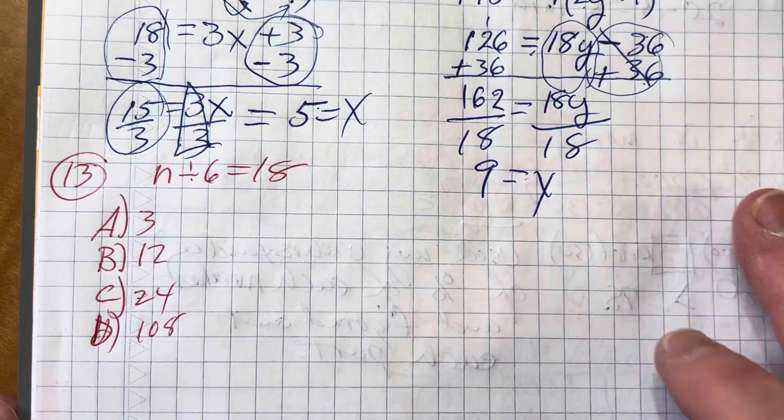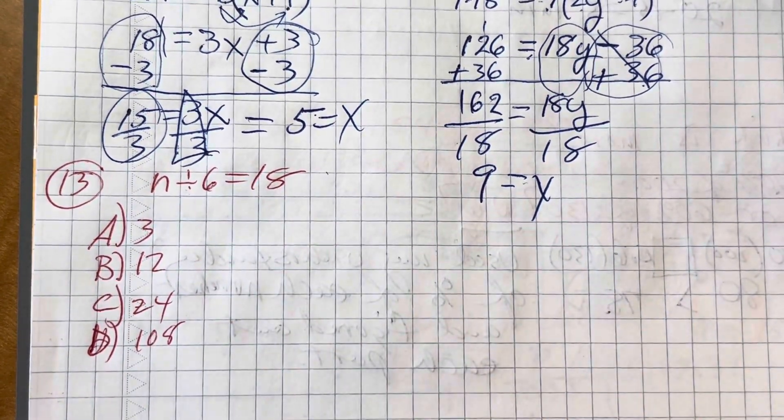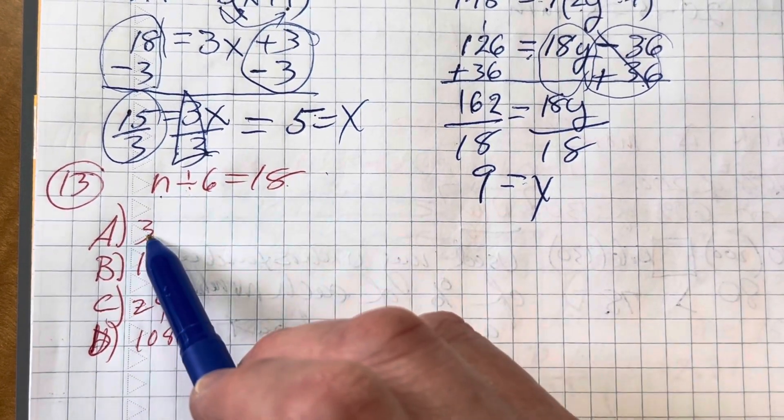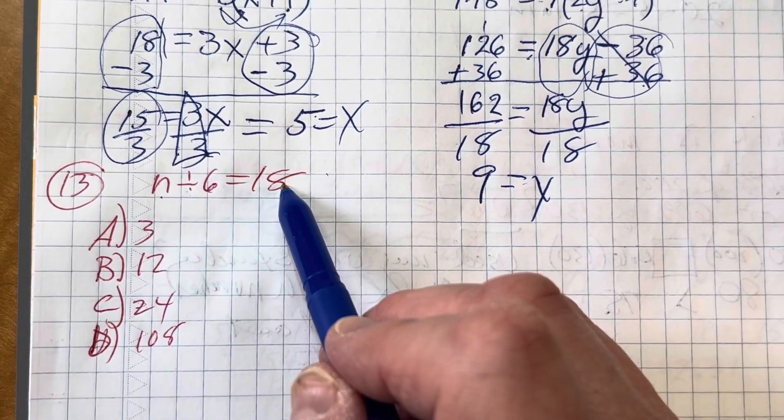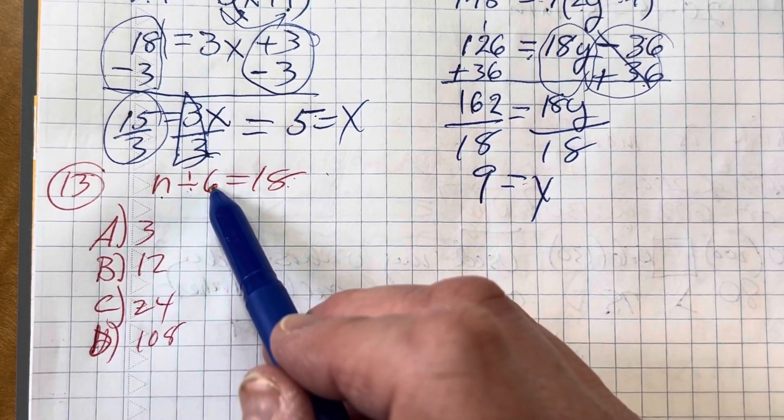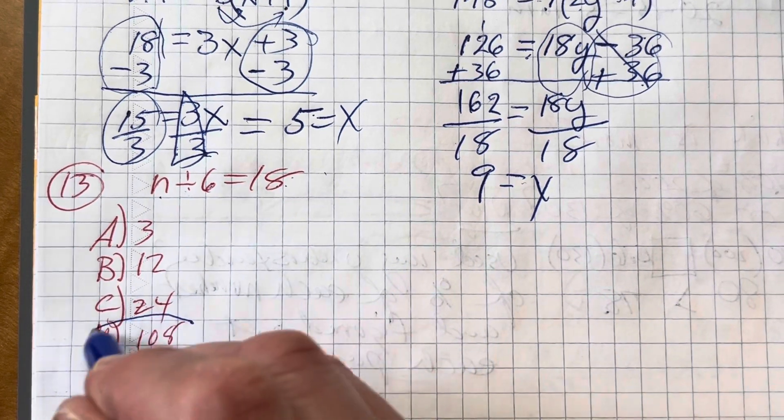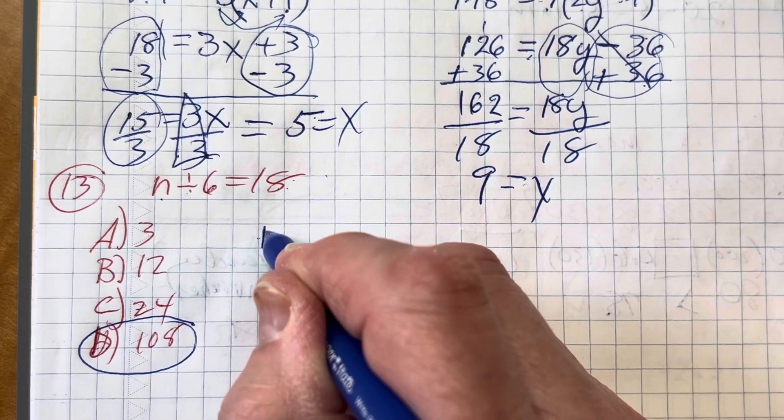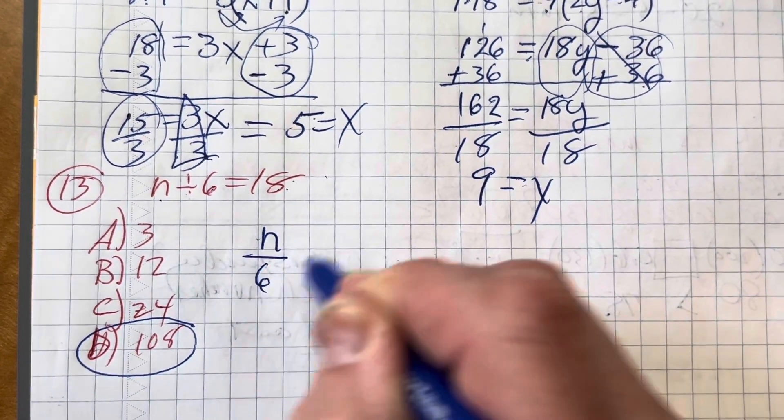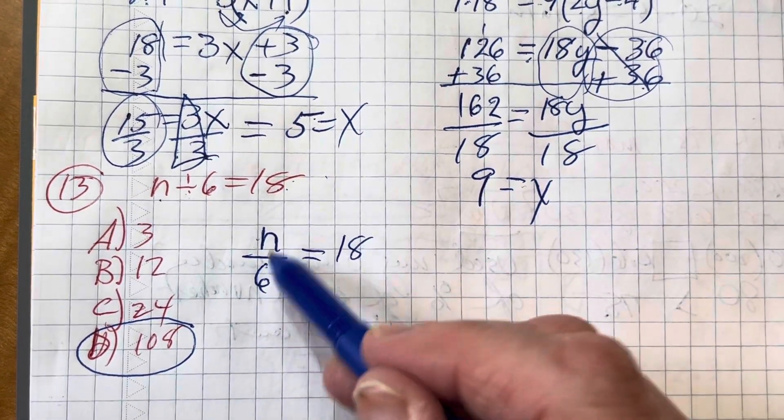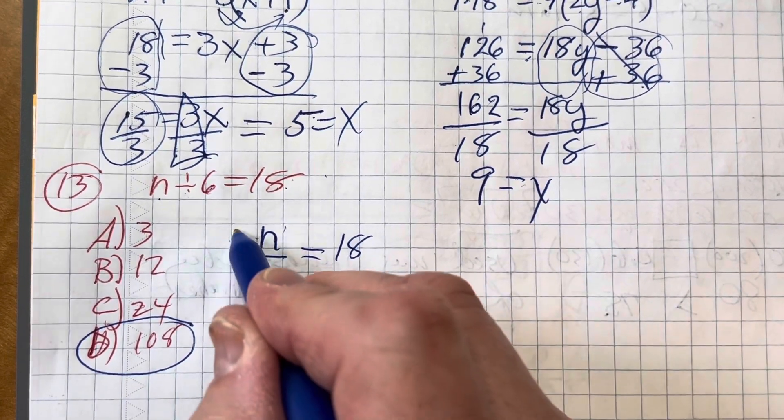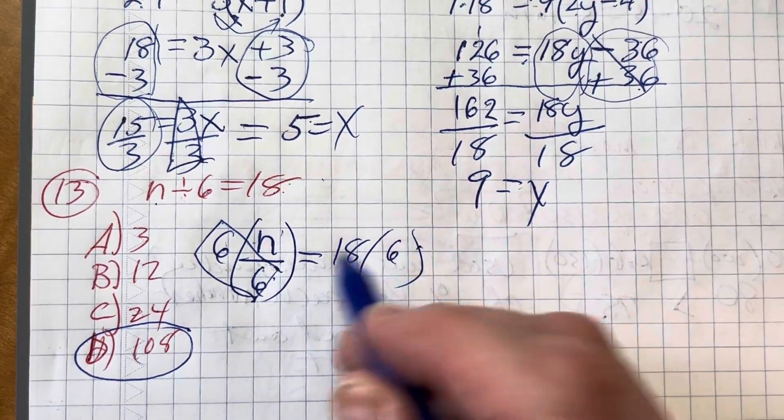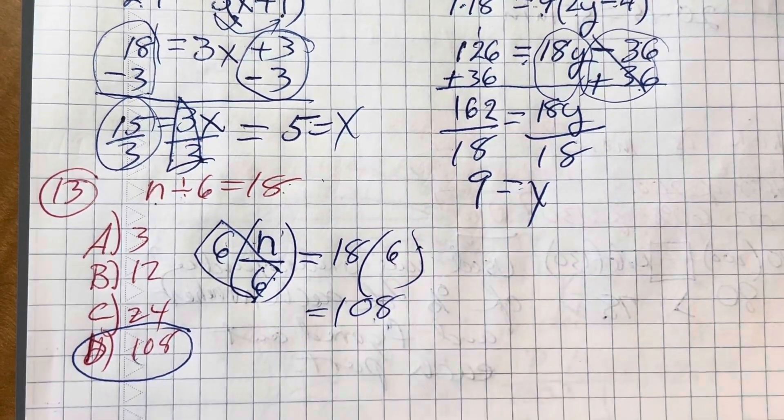All right. Let's look at number 13. We have n divided by 6 equals 18. Now let's think about this for a moment. A number divided by 6 is 18. Would 3 divided by 6 give me 18? Or 12? Or 24 divided by 6 give me 18? The only one left is 108. If you wanted to really write this out as a problem, I would write it this way. Since I'm dividing this by 6, I can go ahead and multiply both sides by 6. This becomes a giant 1. 18 times 6 is 108. That's number 13.